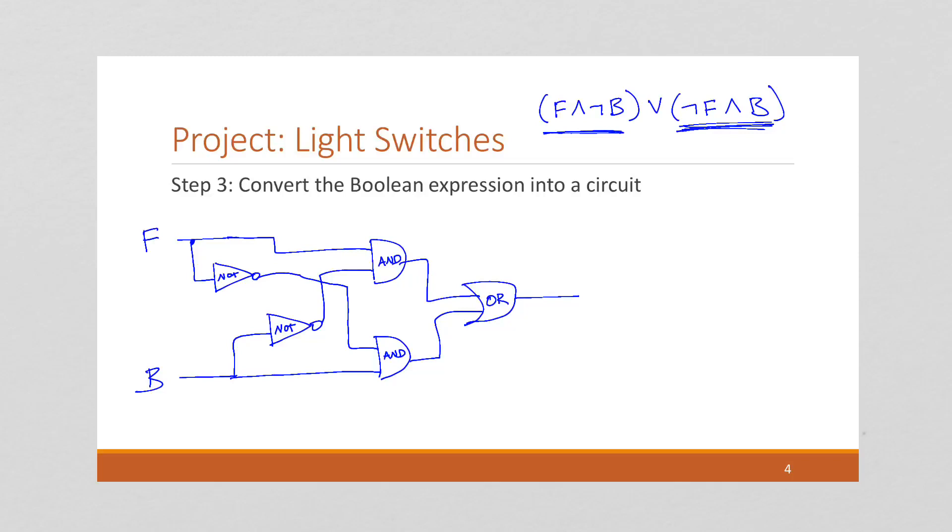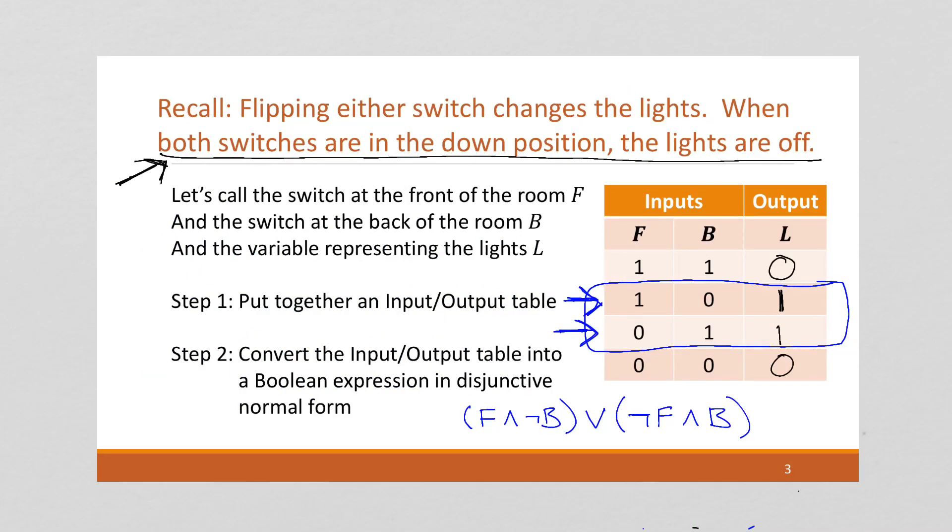So what we've just done is looked at a problem of how to hook up light switches in a classroom, calculated how the design should work, which is this input-output table. How do we want for the, given the inputs for the output to work? Converted that into a Boolean expression.